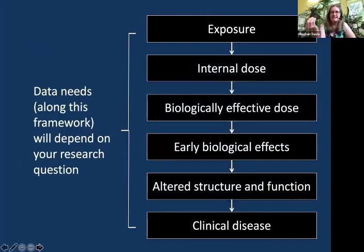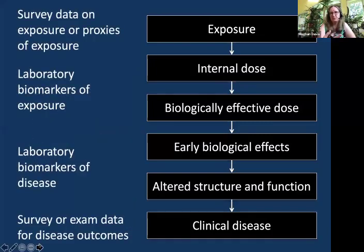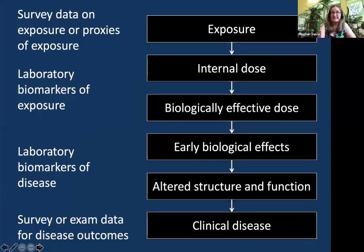The data needs you have along this framework are going to be entirely dependent upon your research question. NHANES is very useful because it contains a lot of different things we can benchmark within this paradigm. There can be self-reported data on exposure held within the questionnaire or survey data, laboratory biomarkers of exposure — such as measurement of different toxicants inside the body — laboratory biomarkers of disease, which are measures of altered structure and function, and survey or exam data related to disease outcomes.